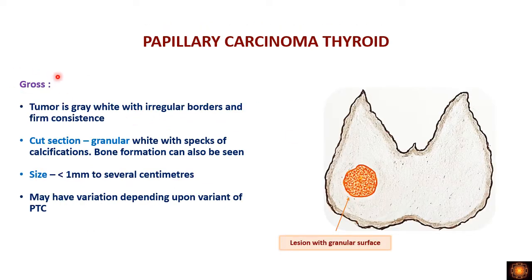On gross examination, papillary carcinoma appears as a firm, gray-white nodule with irregular margins. The cut surface shows a granular surface because of small papillae that appear as granules grossly. Microcalcifications can be seen, and sometimes even bone formation may be present. The size varies from less than one millimeter to several centimeters.